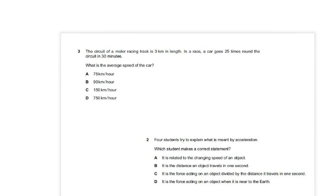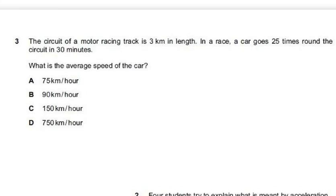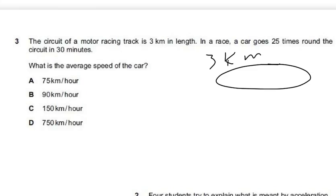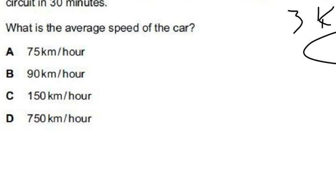Next problem: a racetrack circuit is 3 kilometers in length. A race car goes around the track 25 times in 30 minutes. We need to calculate the average speed. Speed equals distance divided by time, so we first find the total distance: 25 laps × 3 km = 75 kilometers.